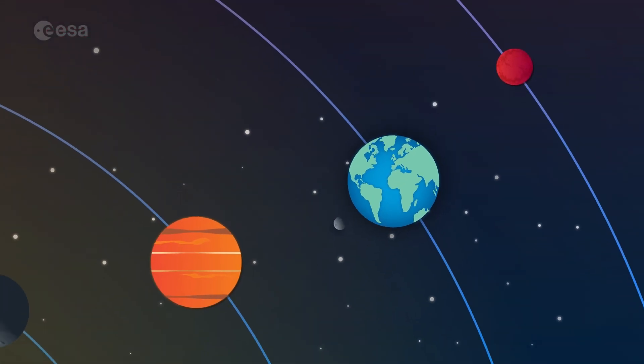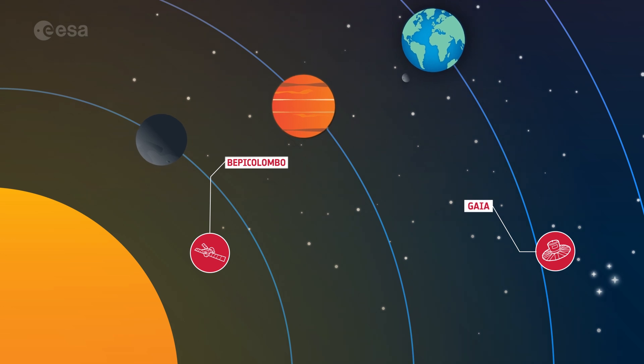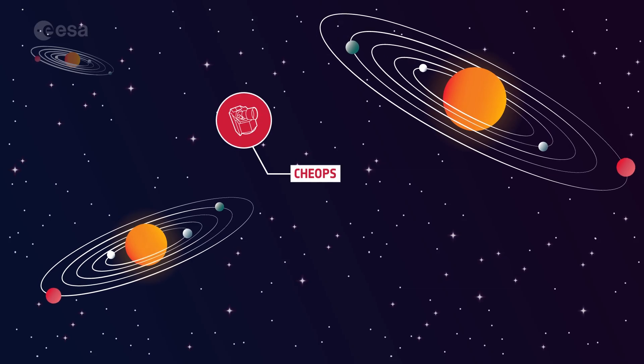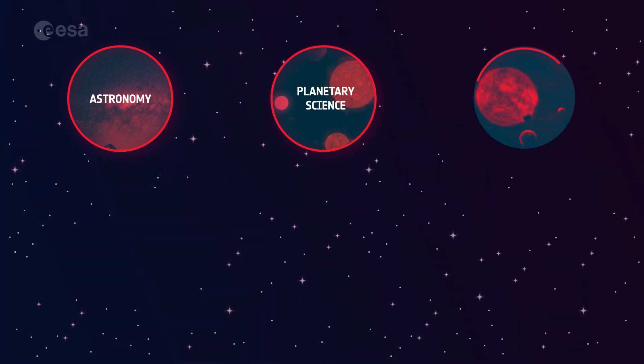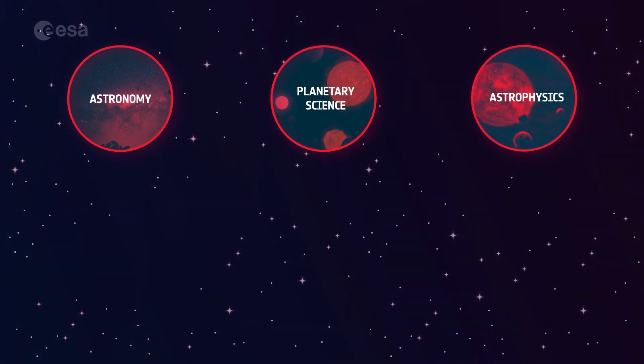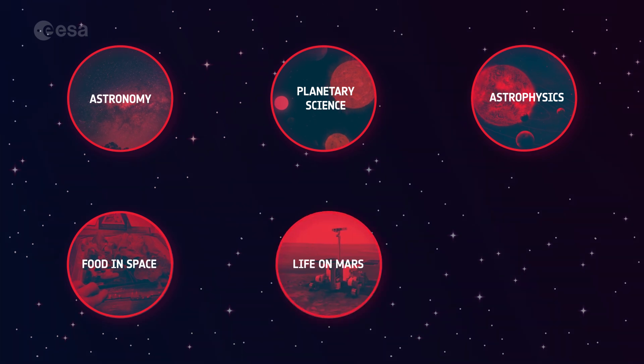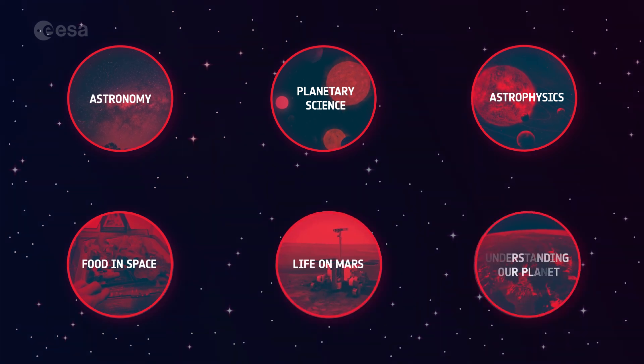From Earth's neighbors to new worlds, we study stars, galaxies and look for exoplanets. In addition to astronomy, planetary science and astrophysics, ESA scientists work on growing food in space, searching for life on Mars and understanding our own planet.